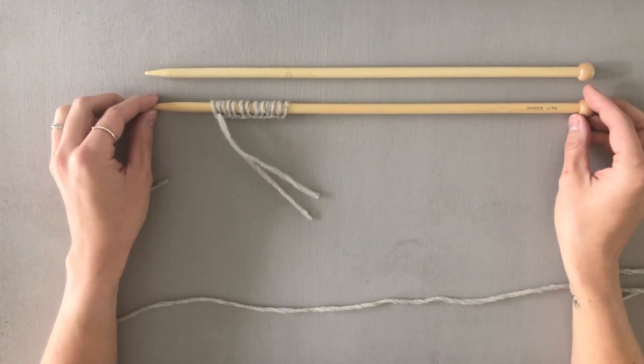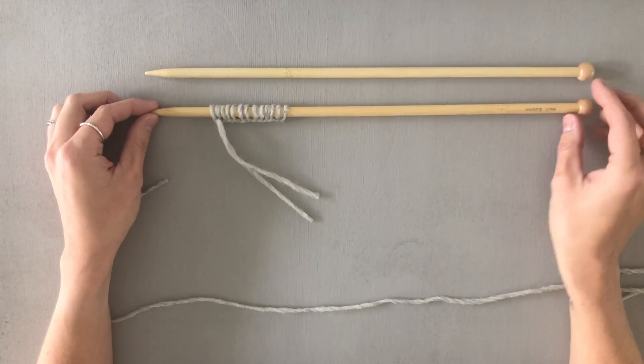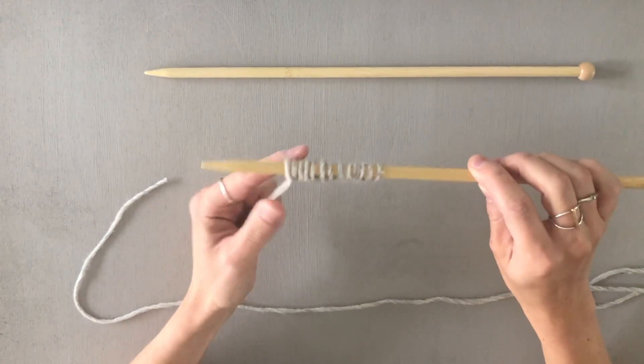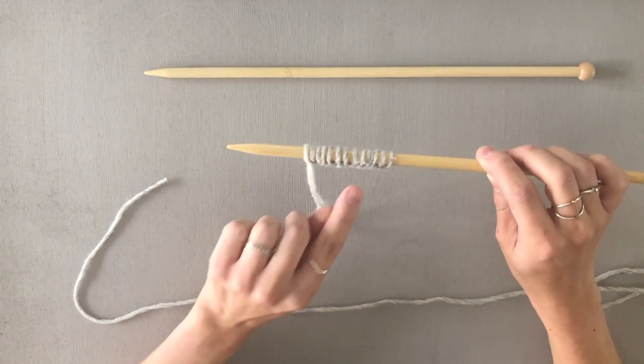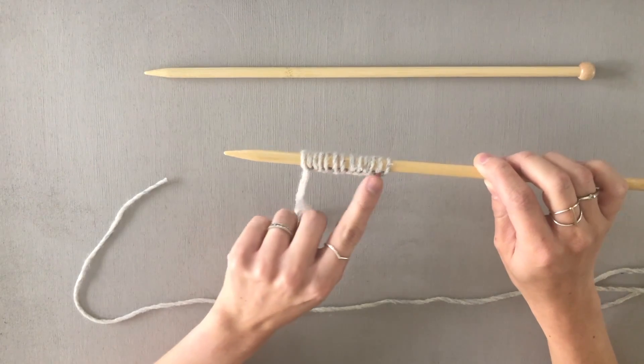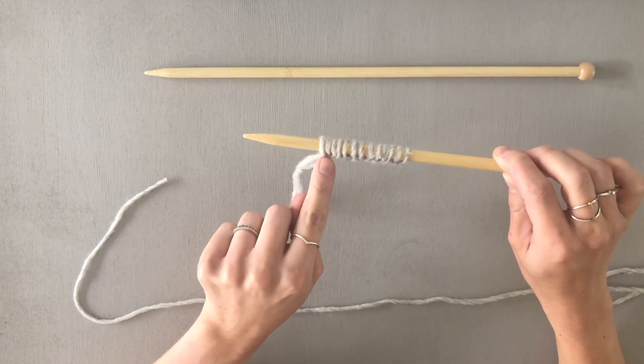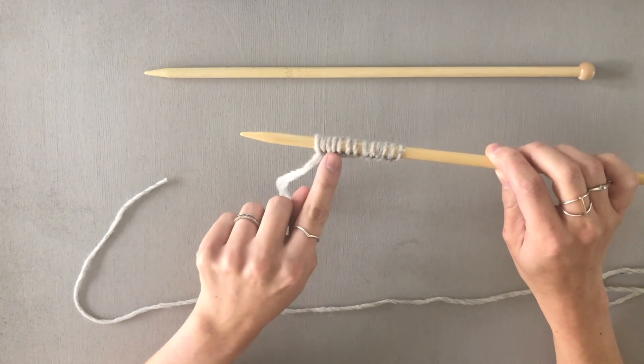Today I'm going to show you how to do a long tail cast on purlwise. Here's a long tail cast on and you can see on the front you can see these little diagonal slashes from the braid.